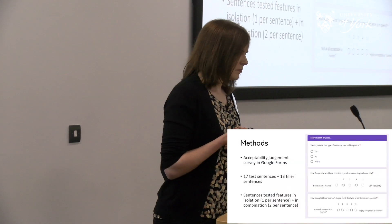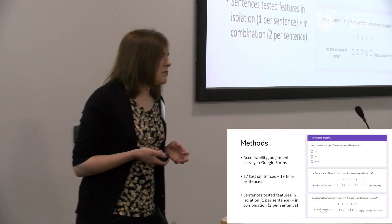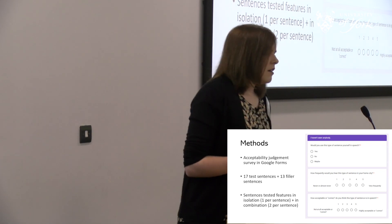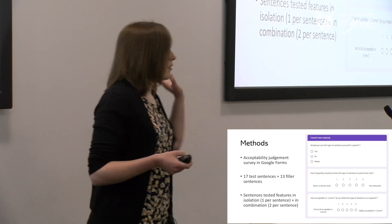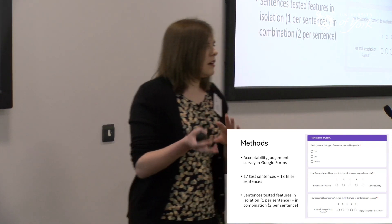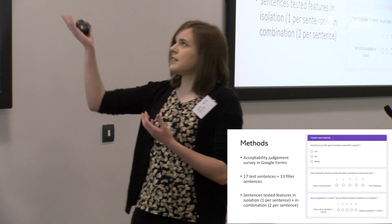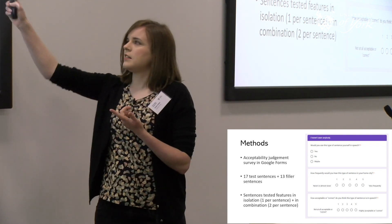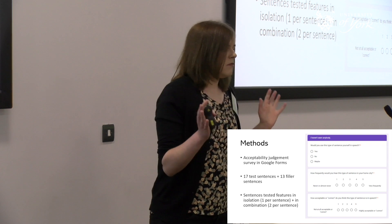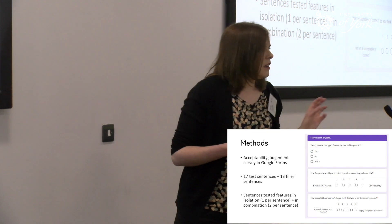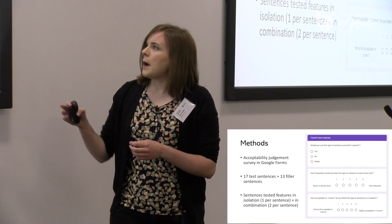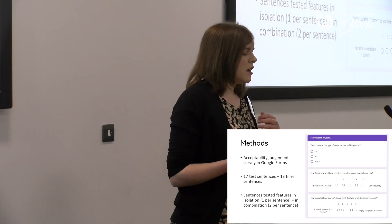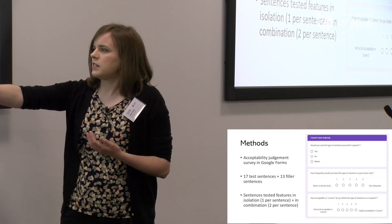Participants did an hour-long sociolinguistic interview over Zoom, plus a survey similar to the one the audience completed. 74 participants took part across the four places, at least 15 per location across different age groups. The survey, done in Google Forms, included test sentences — each featuring either one feature of interest or two in combination — plus filler sentences. Participants were asked: would you use this yourself, how frequently would you hear it in your home city (scale 1–5), and how acceptable or correct is this in speech (scale 1–5)?